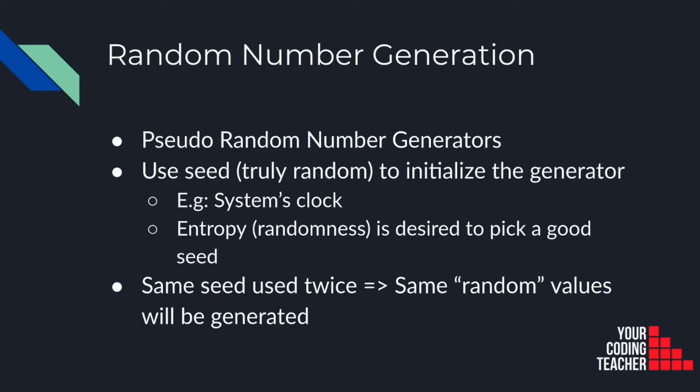Let's talk about random number generation as a general computer science problem. In software there is no such thing as real random number generation. Instead what we have is pseudo random number generation. This means that we have programs that can generate a sequence of numbers based on a seed. To initialize the program you have to pass what is called a seed, which is the source of randomness for the generation. For example, the seed can come from the system's clock. A property that is desired for the seed is entropy. In this context, entropy is a synonym for the randomness of the seed. By design, if you pass the same seed twice to a generator it is going to produce the exact same list of random values. That's why it's not a full random number generator — it's a pseudo random number generator.